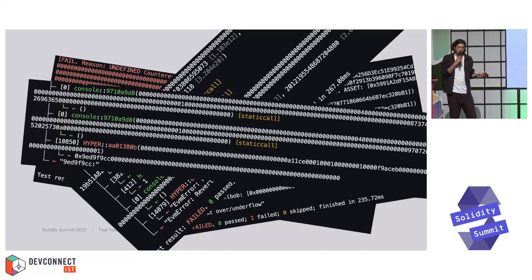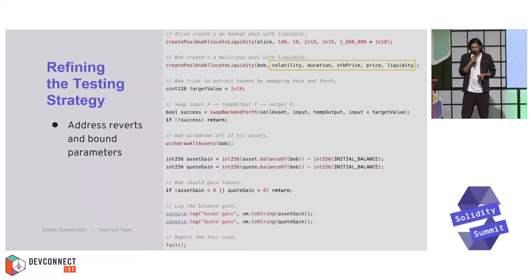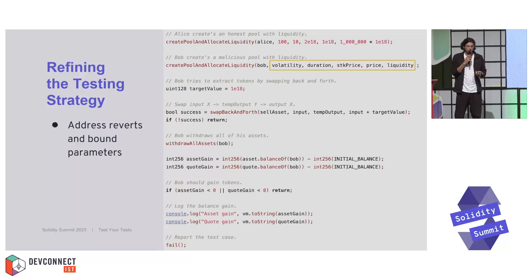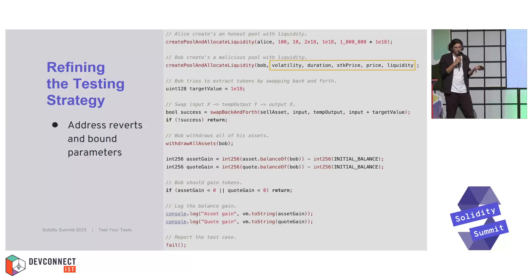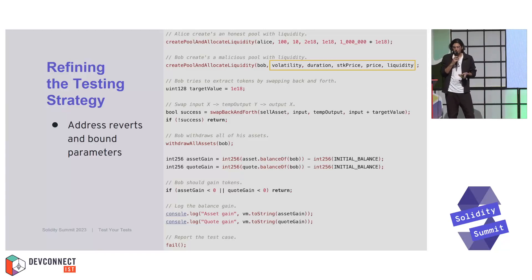We continued this approach, let the fuzzer run for a few weeks, and continued manual review at the same time. After some point we realized this was going nowhere and decided to refine the testing strategy. We had to address all the reverts and properly bound the parameters — all the parameters had defined limits, which was non-trivial because some parameters depended on other parameters and there was some very odd rounding behavior.